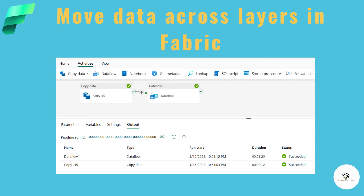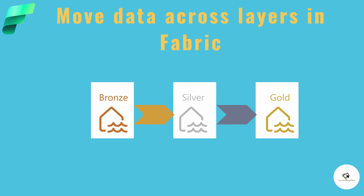The primary tool for data orchestration in Microsoft Fabric is your data pipelines. A pipeline is a series of steps that move data from one place to another — that can be a copy activity, a transformation, or a refresh of your Power BI semantic model. I have already created all the videos for pipelines, Dataflows Gen 2, and notebooks, so please go back and watch those if you haven't.